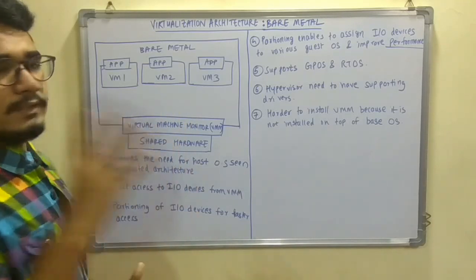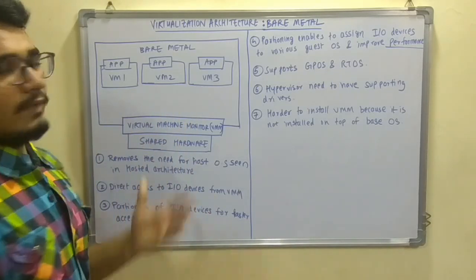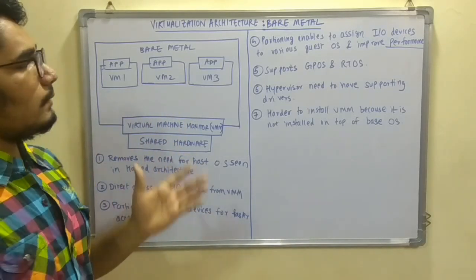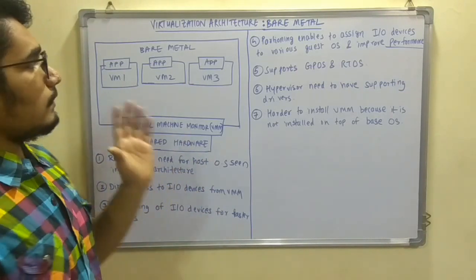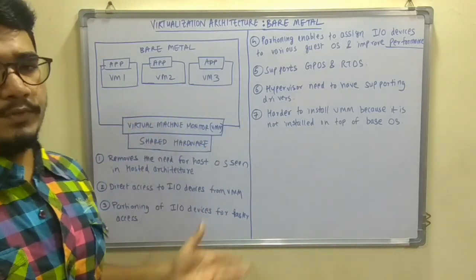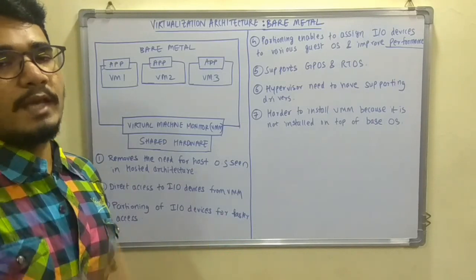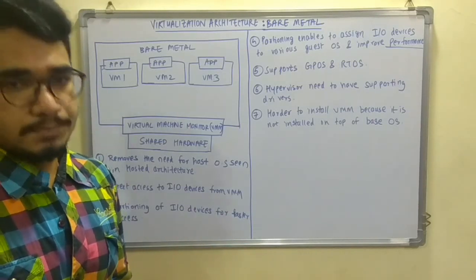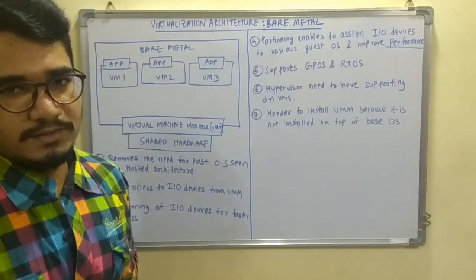Despite these disadvantages, bare metal is the most advised and suggested architecture over hosted architecture. That covers the bare metal architecture for virtualization in cloud computing. If you found this video helpful, please hit the like button and subscribe — thanks for watching.